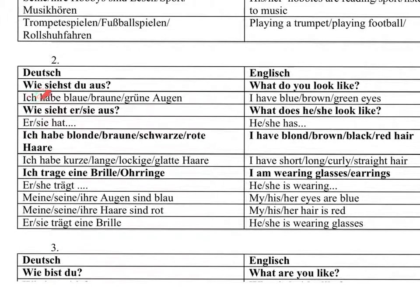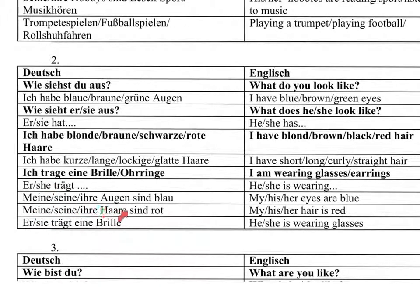You need to differentiate between ich and er oder sie. If it's ich, then the verb is habe. If it's er or sie, then the verb is hat. And then you've got possessive pronouns: seine means his, and ihre means her eyes.